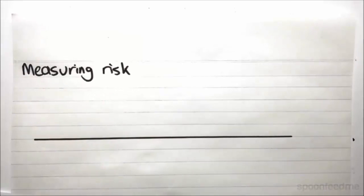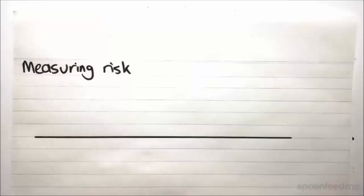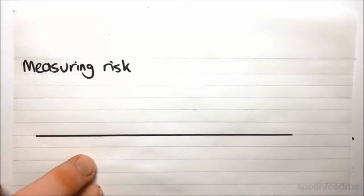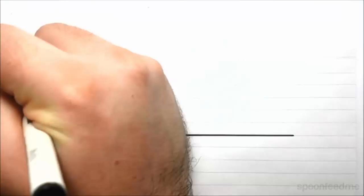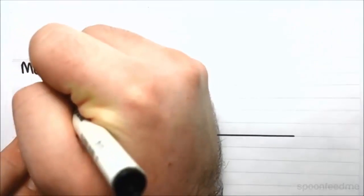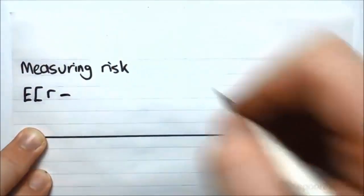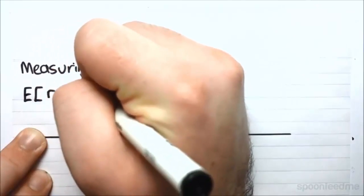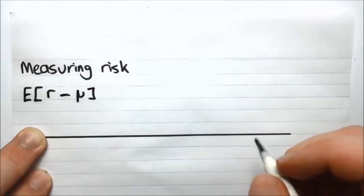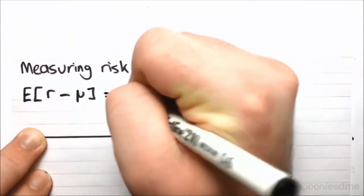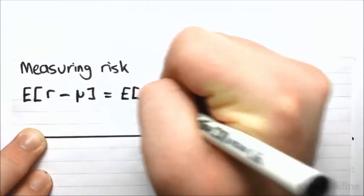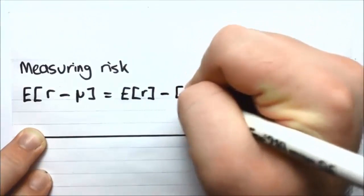So how do we measure the risk? We measure risk in terms of how much we expect the rate to differ from its expected value. So what you might expect there is that we would say maybe, how about the expected value of the difference? Seems pretty logical, right? R minus, and we denote the expected value as mu. So this seems like a pretty reasonable thing, right?